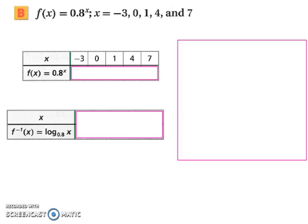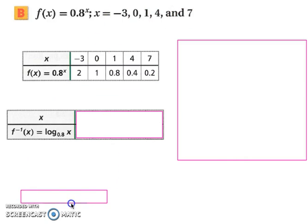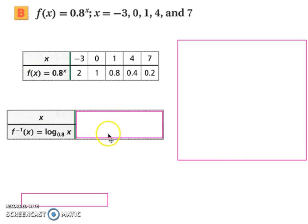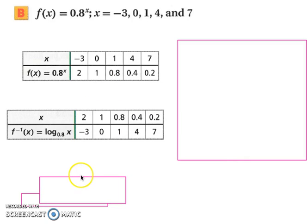Try this next one on your own. When you return to the video, the answer will be revealed. So we have f(x) equals 0.8 to the power of x. When we substitute in our domain values, we end up with 2, 1, 0.8, 0.4, and 0.2. To find the inverse, we simply switch the x and y values, and then we can graph.